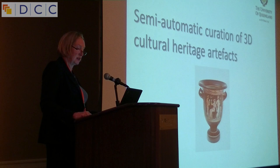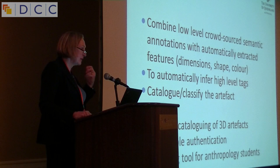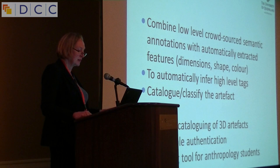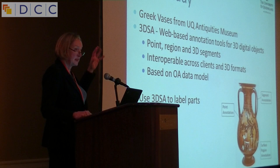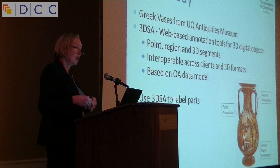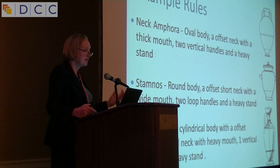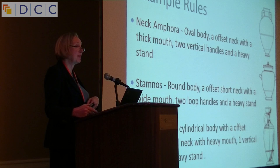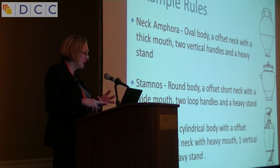In this case study, we're using crowdsourced semantic annotations combined with automatically extracted information about dimensions, shape, and colour to help automatically authenticate and catalogue artifacts. We're working with Greek vases from the UQ Antiquities Museum. We've developed a 3DSA tool — a web browser-based tool — that allows you to semantically annotate points, surface regions, or 3D volumetric fragments of 3D artifacts. It's based on the open annotation data model, extended with X3D fragment identifiers. We've defined a set of rules; the Greek vase domain is one in which you can apply semantic inferencing and rules-based reasoning. For example, a neck amphora is characterised by having an oval body, offset neck with a thick belt, two vertical handles, and a heavy stand.